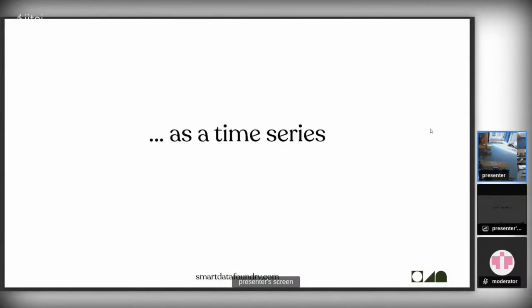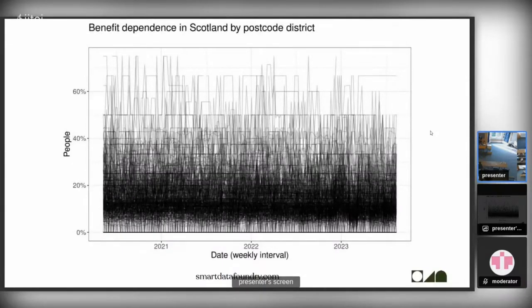The cool thing we can do with this data is that we have it on a weekly basis, so rather than just showing things statically on a map, we can show it as a time series. I've done this as a bit of a quiz: every one of these lines is a different postcode district in Scotland — where it's darker, more districts are overlapping. We're here in the G12 postcode — where do we think G12 sits on benefits dependence in Scotland? Hands up for really low? Hands up for somewhere in the middle? Hands up for somewhere high?